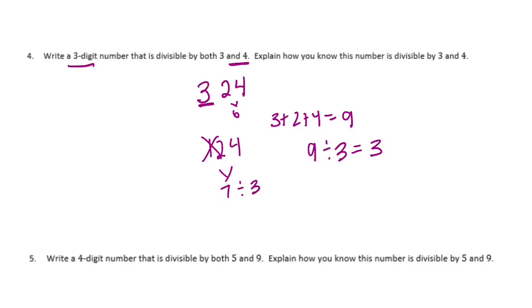There are tons of different answers. You can use something completely different, but 324 works. We could also use 624 — 6 plus 2 plus 4 is 12, which is divisible by 3, and 24 is divisible by 4 because 24 divided by 4 is 6. So either one of those would work, or you can think of something different.